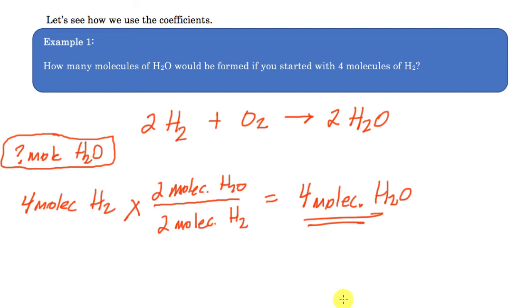That's how much would be formed in this particular reaction. So that's how we use the balanced equation. I'm going to create these little ratios and proportions to figure out how much is going to be formed. So let's take a look at another example.